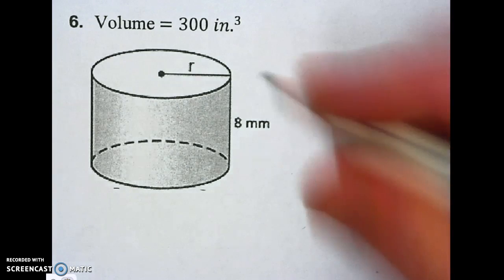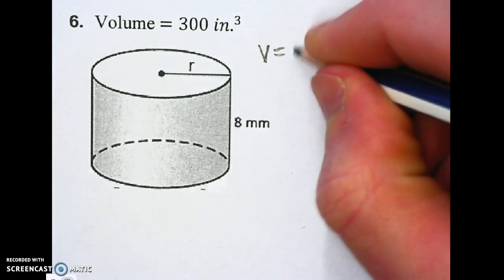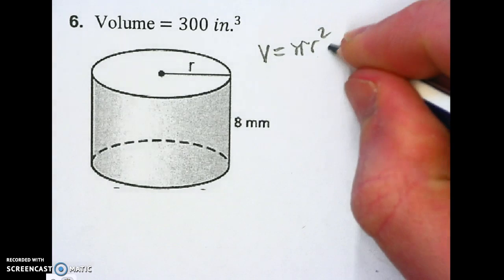So I'm going to write down my volume formula for a cylinder, and that is pi r squared, the area of a circle, times the height.